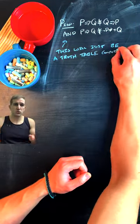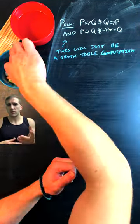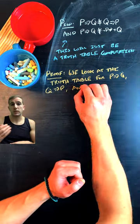So in order to do this, we just construct the truth table for p implies q, its converse q implies p, and its inverse not p implies not q.